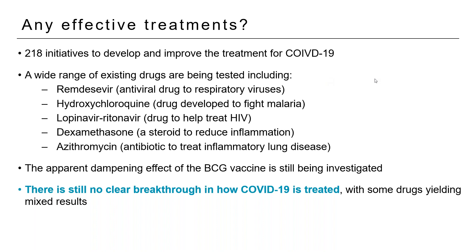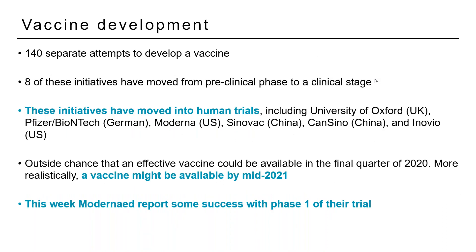There is an increased focus on vaccine development. Believe it or not, there are 140 different institutions around the world looking to develop a vaccine — an incredible number. Most of these 140 initiatives are still in preclinical phase, meaning they are still developing the vaccine and not yet in a position to start testing. But eight of these initiatives have moved to a clinical phase, which will involve human trials.